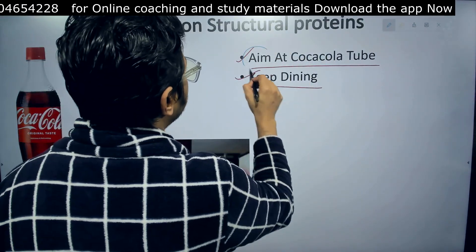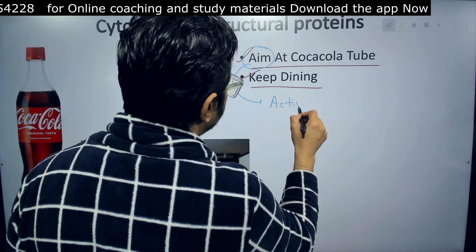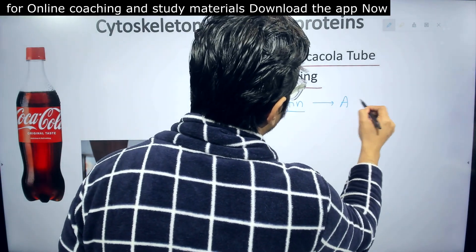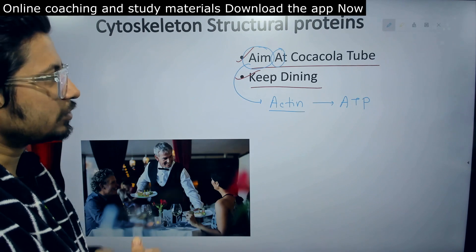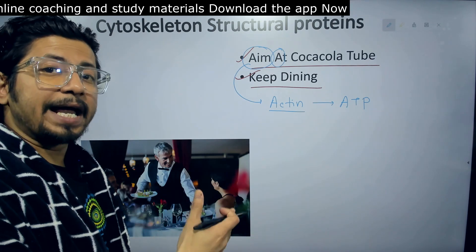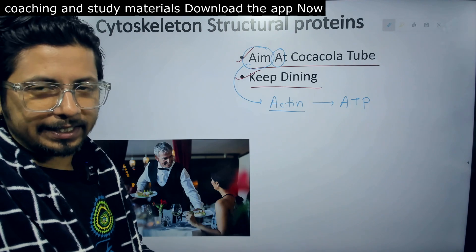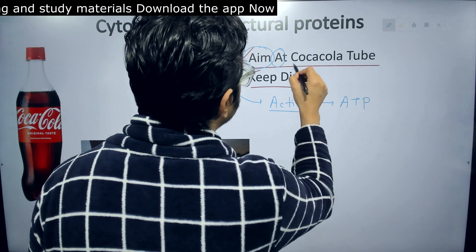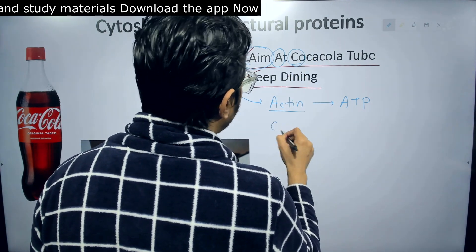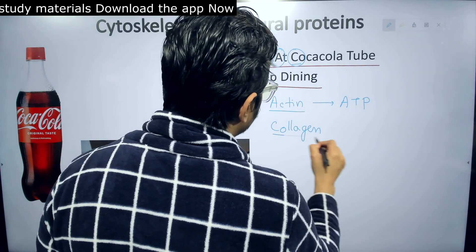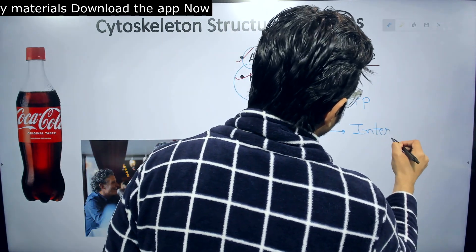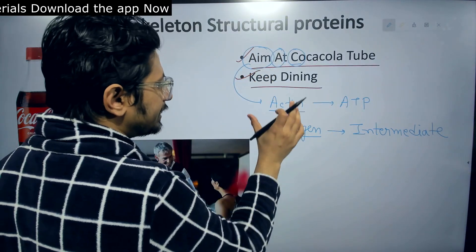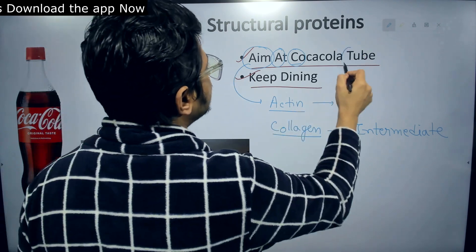So remember: A in 'aim' stands for actin filaments, and the other A stands for ATP. Actin filaments are associated with ATP — ATP-actins are the active subunits of actin, and ADP-actins are the inactive subunits. Next, C in Coca-Cola stands for collagen, which is a part of the intermediate filament. So actin is the thinnest, and intermediate filaments are intermediate in size.